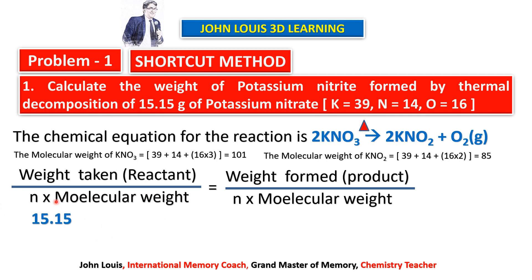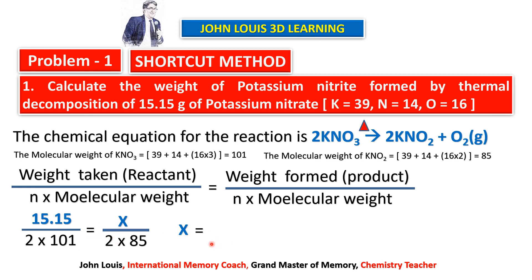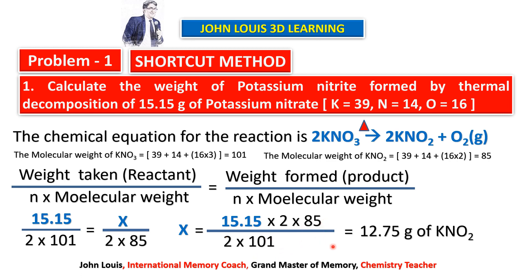Just remember this formula: weight of reactant ÷ (n × MW of reactant) = weight of product ÷ (n × MW of product). Substitute: 15.15 ÷ (2 × 101) = x ÷ (2 × 85). Therefore x = 12.75 grams of KNO₂. We need to balance the equation perfectly to know the number of moles n for both reactant and product.